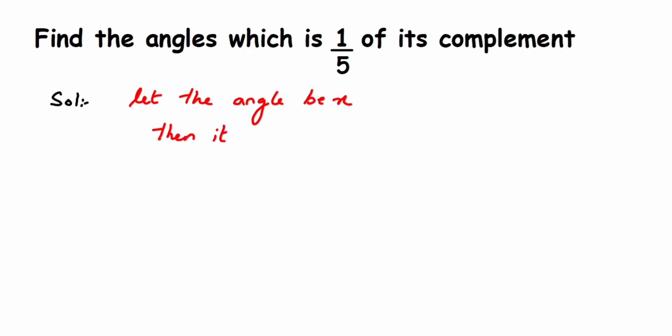How have I written 90 minus x? Because when you add these two angles, the sum should be equal to 90 degrees, right? I have taken one angle as x. If you transpose x to the other side, the complement will be equal to 90 minus x.